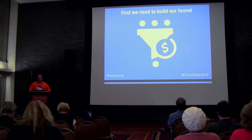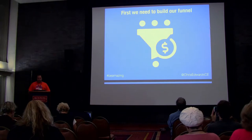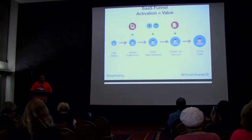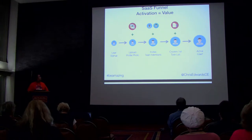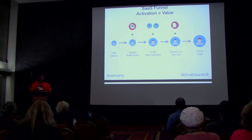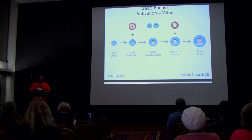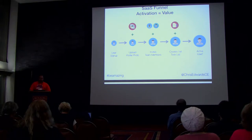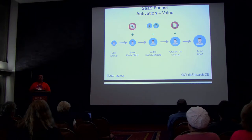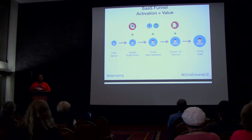We're going to jump into how to create an A/B test. The first thing you need to do is create a funnel. Here's a standard SaaS funnel — we're considering an active user as our activation circle. We go: user sign up, user uploads their profile photo, they invite a team member, create the first task, and then they're an active user. You have to define your funnel and figure out the steps before you can accurately set up a conversion test.